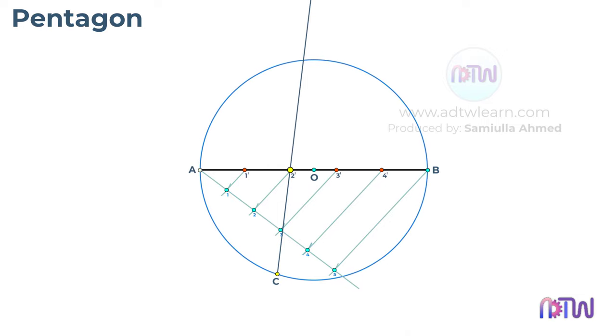Using this length, cut an arc on the circumference of the circle. Take a compass and adjust it to this length AC. Cut arcs on the circumference of the circle. These are the 5 required corner points of the pentagon. Join these points with lines.